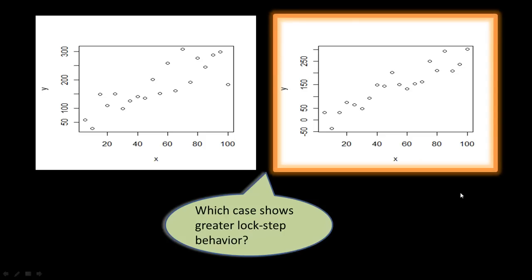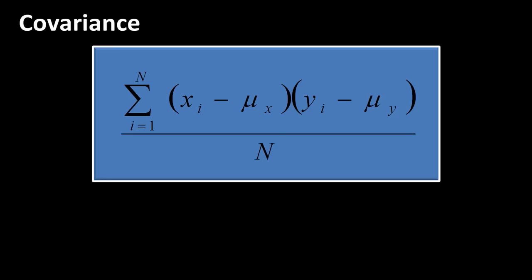The right scatter plot shows a much tighter association between variables. We want to capture this intuition in the form of a number so we can compare relationships quantitatively. To do that, two measures are available. One is called covariance — obviously what we are trying to do is find out how two variables vary together.